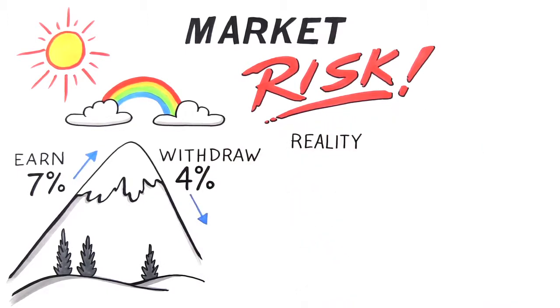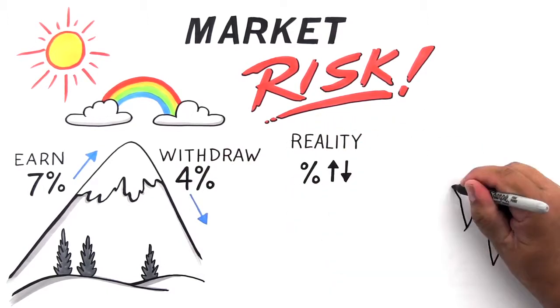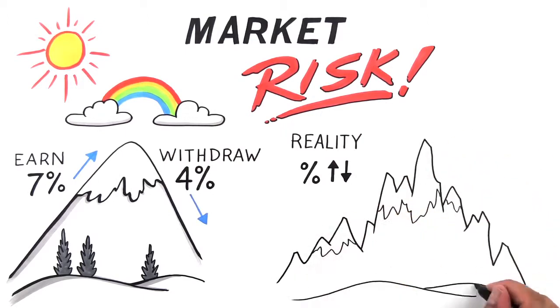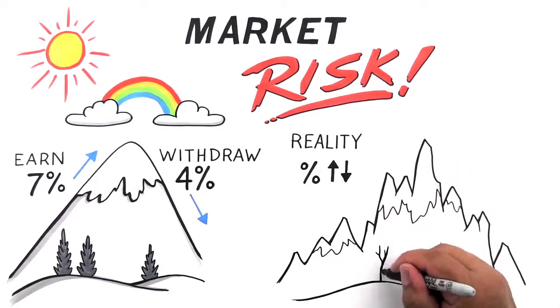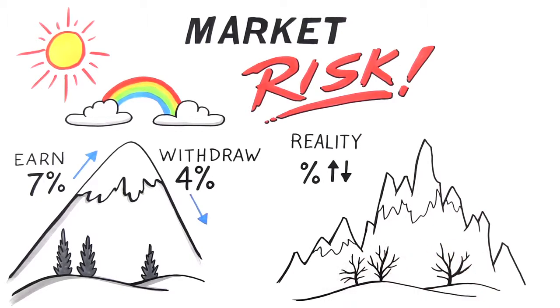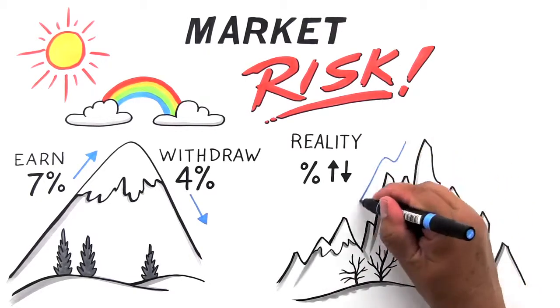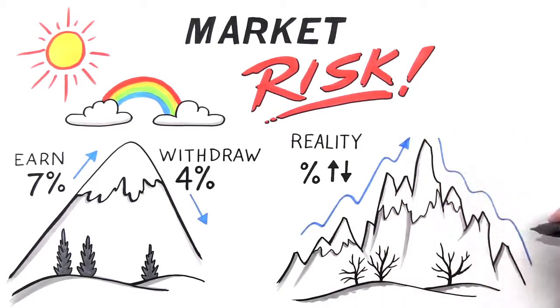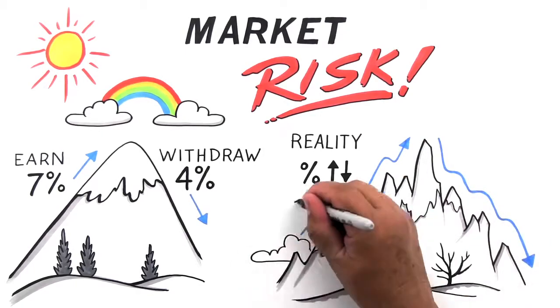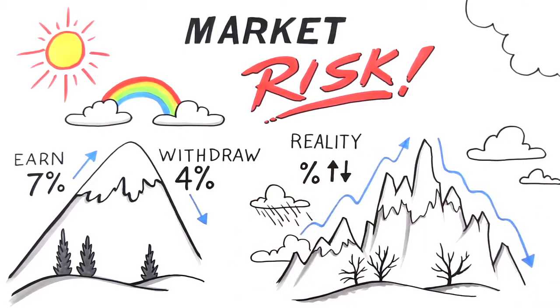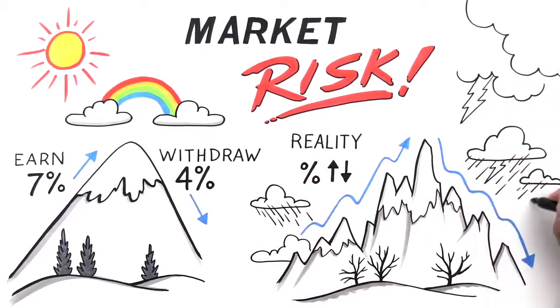However, in reality, the stock market never produces consistent, smooth returns. Market returns vary dramatically from year to year, creating what is called sequence of return risk or market risk. Our specific climb back down in retirement will likely be very bumpy instead of nice and smooth, especially depending on what economic cycle we happen to begin retirement.